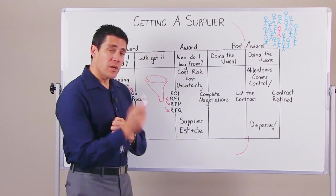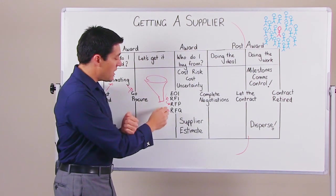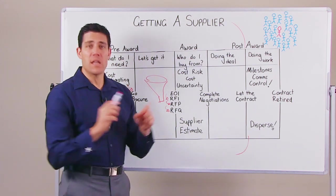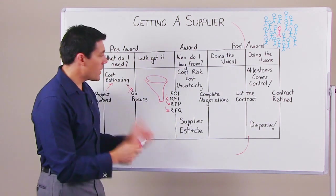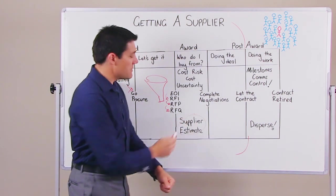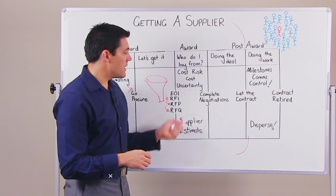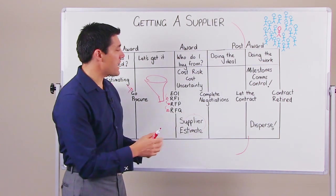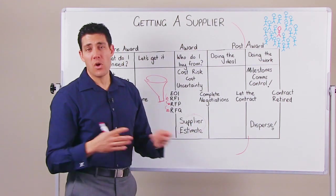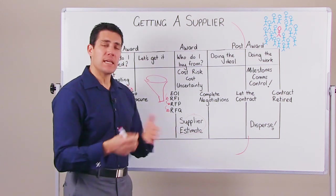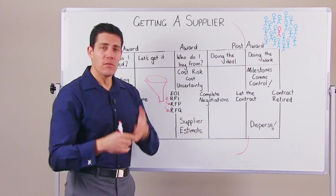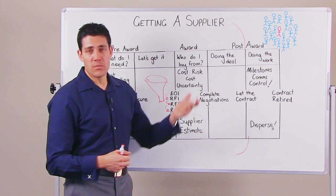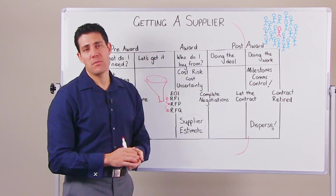What you're trying to do is whittle down the list of potential suppliers down to two, a primary and a secondary. Once you get that and you get the supplier estimate and their quotation, then you can start doing your negotiations with them. Part and parcel to that is understanding what the risk of the cost is. How risky is that cost of your project to go above your budget? The total cost of the project and any uncertainty levels that you might have.